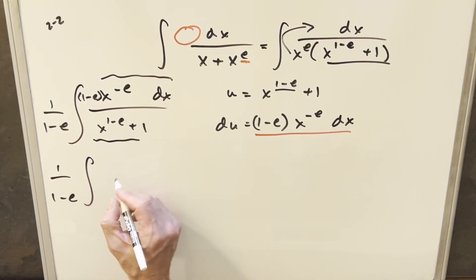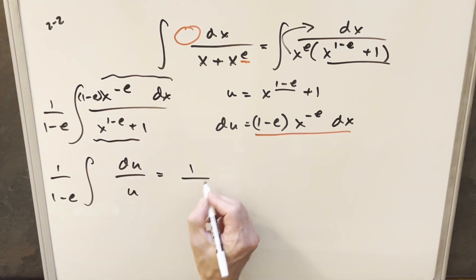What we're going to end up with is a very simple integral. We're just going to have du and this is going to be u. So we'll just go ahead and integrate. So what's going to happen here, this is actually just going to be natural log absolute value of u.